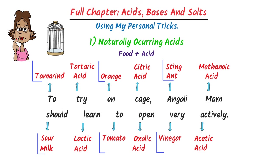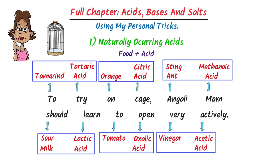The first one is the fruit and the second one is the acid present in it. Using this trick, we can easily learn all the naturally occurring acids. Note down the list of foods and the acids found in them.